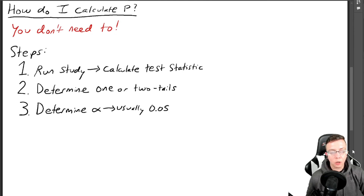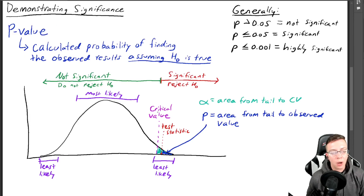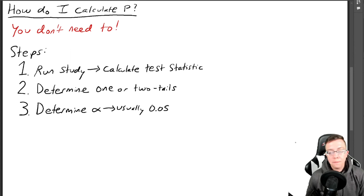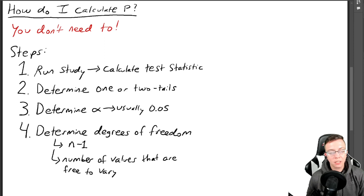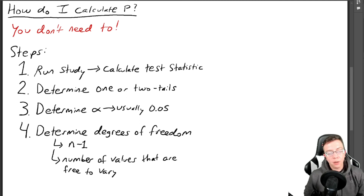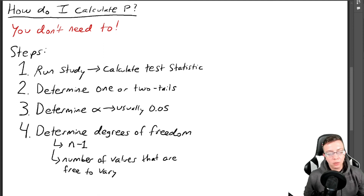Then you need to determine your alpha. Usually alpha is 0.05, but you need to know what your parameters are — define what area is significant. And finally, you need to determine your degrees of freedom. This is related to the number of people, animals, or whatever you are studying — the number of samples. Your sample size minus one gives us our degrees of freedom. So if I have a study with 35 people, I take N of 35 and subtract one, giving a degrees of freedom of 34.